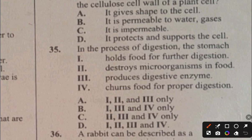Question 35. In the process of digestion, the stomach: I. Holds food for further digestion, II. Destroys microorganisms in the food, III. Produces digestive enzymes, IV. Churns food for proper digestion. All four statements are correct — the stomach holds food, destroys microorganisms, produces digestive enzymes, and churns food. The answer to question 35 is D, I, II, III, and IV.